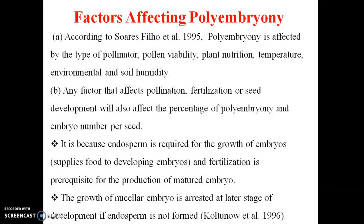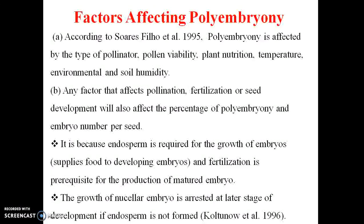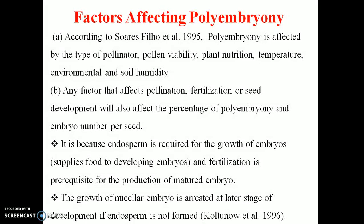Factors affecting natural polyembryony include: pollen viability, plant nitrogen, temperature, humidity, pollination, fertilization, and seed development all affect the percentage of polyembryony. Endosperm is a primary nutrition provider and fertilization is a primary requirement, so these will affect polyembryony. The growth of the nucellar embryo depends on a later stage of development when endosperm formation is proper. Endosperm development also affects polyembryony.